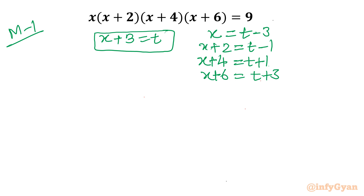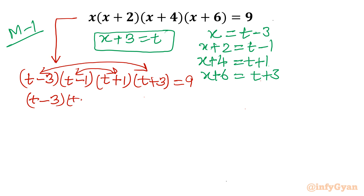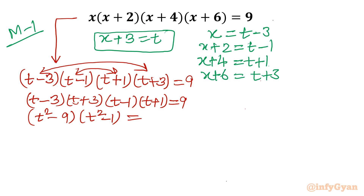Now I will put all the values into the given equation. Our equation becomes (t minus 3)(t minus 1)(t plus 1)(t plus 3) equal to 9. We can rearrange this using difference of two squares: (t minus 3)(t plus 3) times (t minus 1)(t plus 1) equal to 9, which gives (t² minus 9)(t² minus 1) equal to 9.